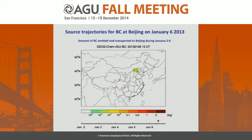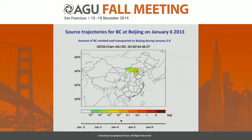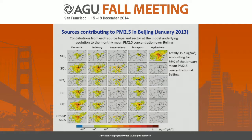Now, moving to the adjoint. This movie shows how the model adjoint tracks the pollution source. We take the example for black carbon at Beijing on January 6th. The movie runs backwards, telling us in the past five days where black carbon was emitted and transported to Beijing on January 6th. We can see the value decays very quickly, indicating the short lifetime of black carbon. The movie is very similar to a back-trajectory but provides much more quantitative estimates.